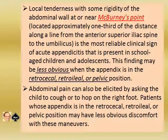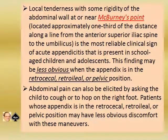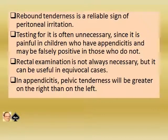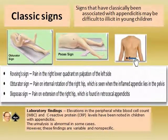Abdominal pain can also be elicited by asking the child to cough or to hop on the right foot. Patients whose appendix is in the retrocecal, retroileal, or pelvic position may have less obvious discomfort with these maneuvers. Rebound tenderness is a reliable sign of peritoneal irritation, though testing for it is often unnecessary as it is painful in children with appendicitis and may be falsely positive in those without. Rectal examination is not always necessary but can be useful in equivocal cases; in appendicitis, pelvic tenderness will be greater on the right than on the left side.